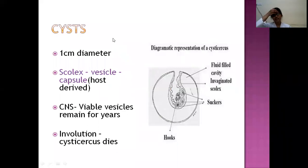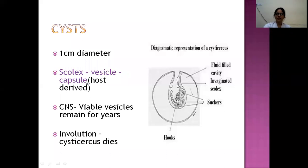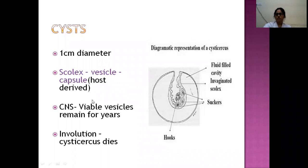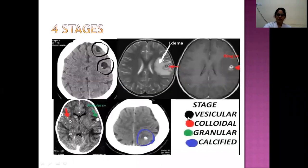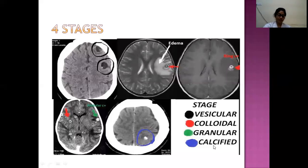Anatomy of the cysts: they are about one centimeter in diameter, comprising three parts — the scolex, which is invaginated into the vesicle containing clear fluid; the vesicle itself; and a capsule formed by immune elements produced by the host. Within the CNS, these vesicles can remain viable for many years. When the cyst dies, this process is called involution. Cysts are classified into four stages: the vesicular stage, the colloidal stage, the granular stage, and the calcified nodule.